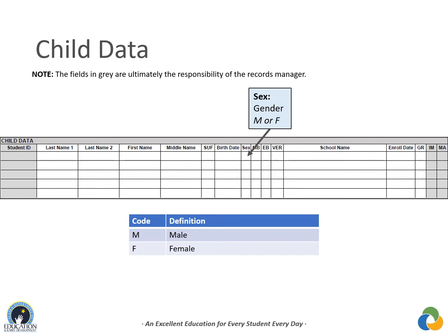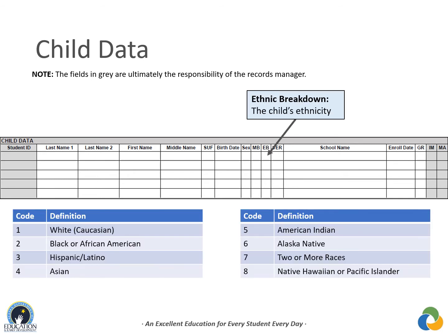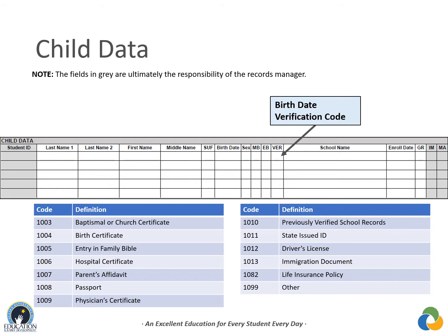The sex column records the child's gender — M for male, F for female. The MB (multiple birth flag) column uses Y for yes if the child was part of a multiple birth such as twins or triplets, and N for no if a single birth. The EB column records the child's ethnic breakdown according to the parent or guardian, using codes listed in the recruiter handbook; these appear as a drop-down list in the web system. The birthday verification code is a four-digit code corresponding to the evidence used to confirm the child's date of birth — recruiters relying on the interviewee's verbal statement can use 1007 for parent's affidavit. Codes are listed in the recruiter handbook and appear as a drop-down in the web system.